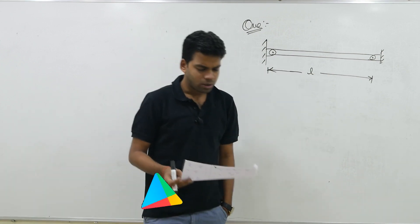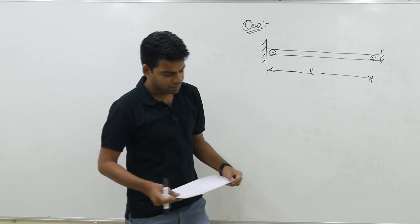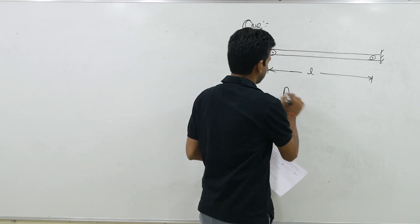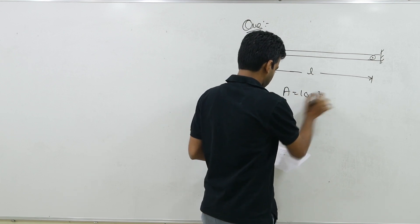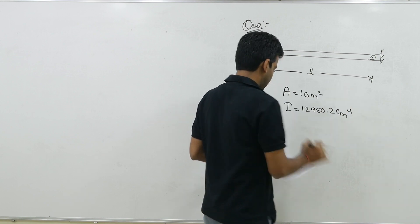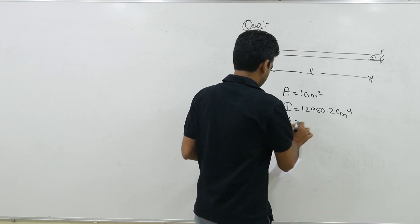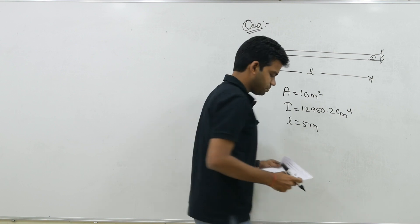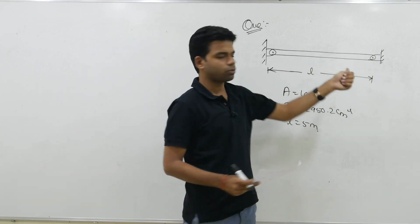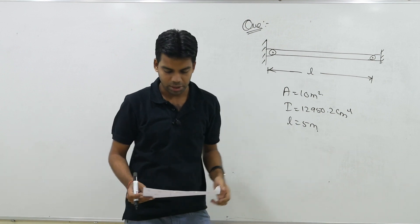However, this question is simple. We have got one slender bar of area 10 meter square, I is given as 12,950.2 centimeter to the power 4, length is given as 5 meter. It is pinned to immovable supports. The supports are immovable and the type of joint is the pin joint, hinge joint you can say.